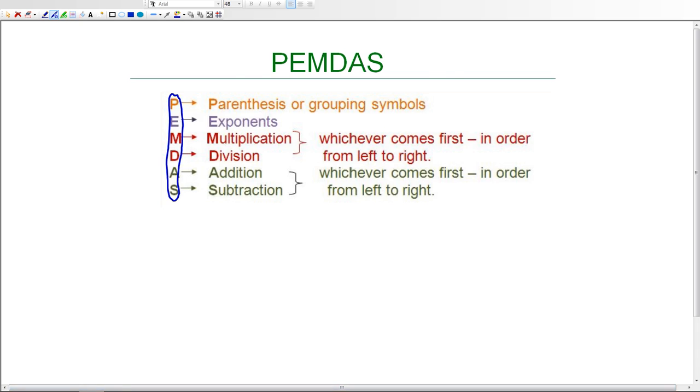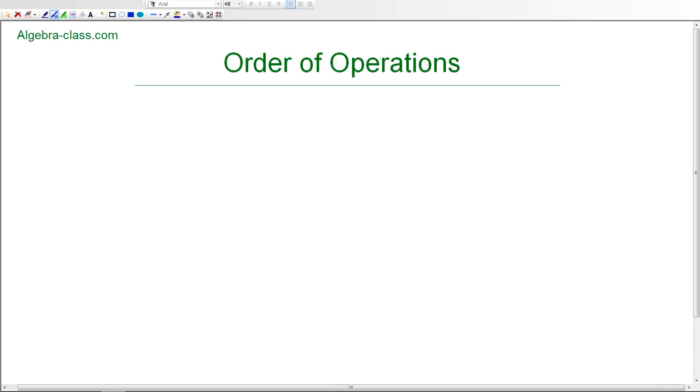So, let's take a look at an example together. And the first one that we're going to look at is 38 minus 4 times 7 plus 8 divided by 2. Now, notice this is the division symbol. It looks like a fraction bar, and the fraction bar is a division symbol. So, that's how we're going to think of it in this problem.